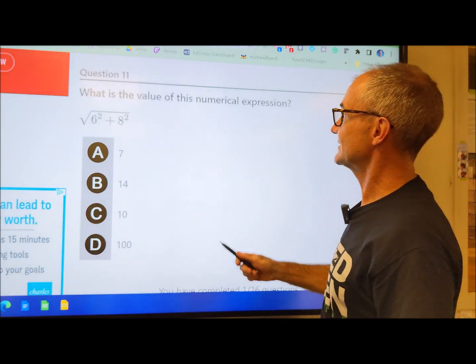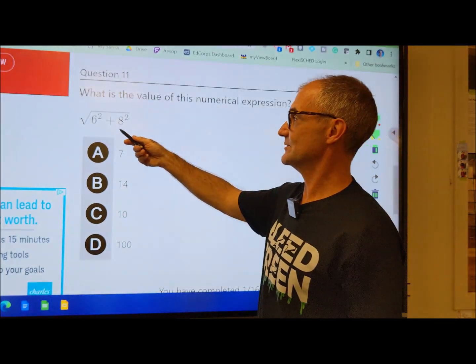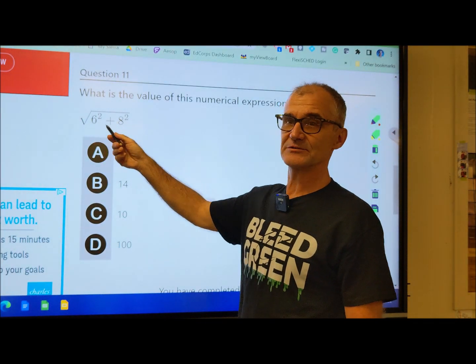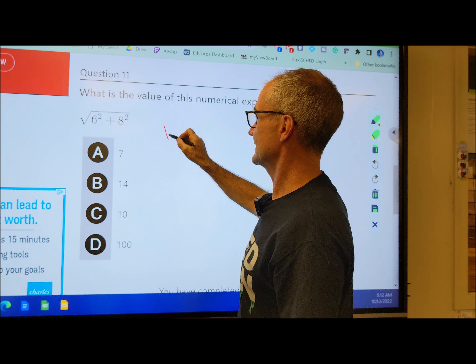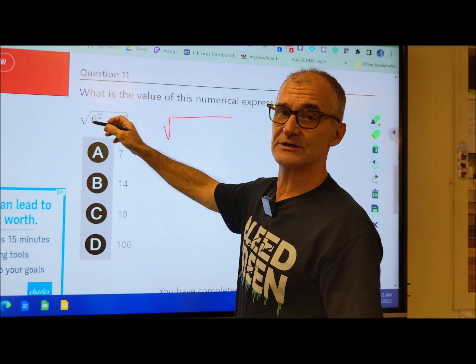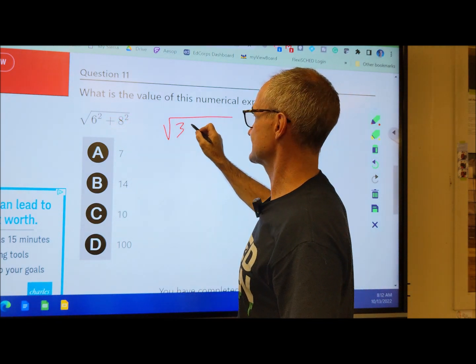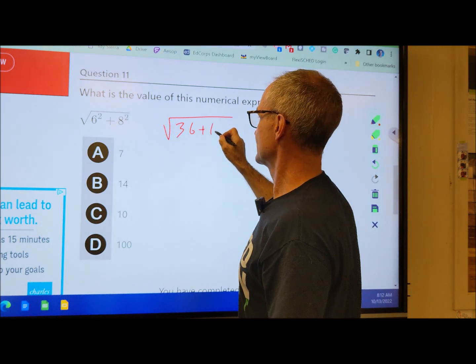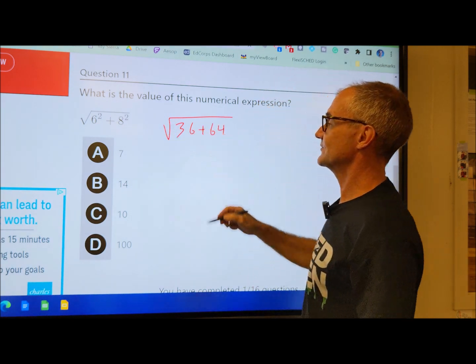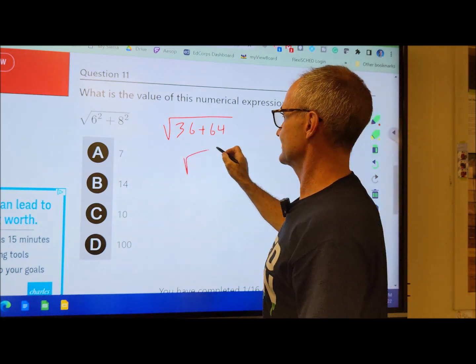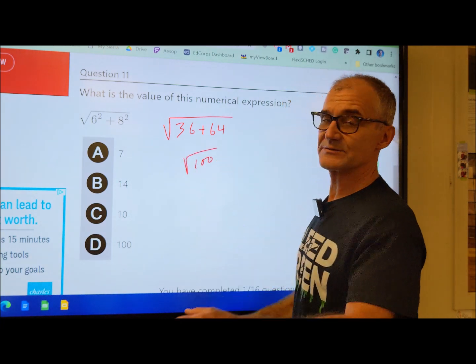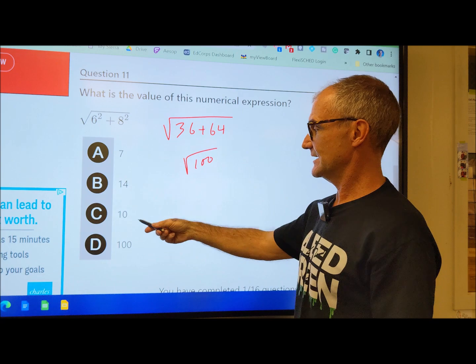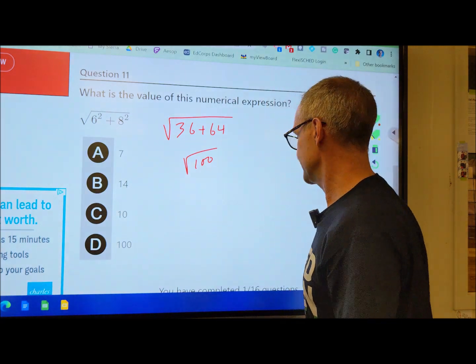Problem 11. What is the value of this square root? I'm going to do the exponents before I do the square root. So I have a square root of 6 squared is 6 times 6, 36. 8 squared, 8 times 8 is 64. 36 and 64 is 100. So I have a square root of 100. What times itself will equal 100? And the correct answer is C, 10.